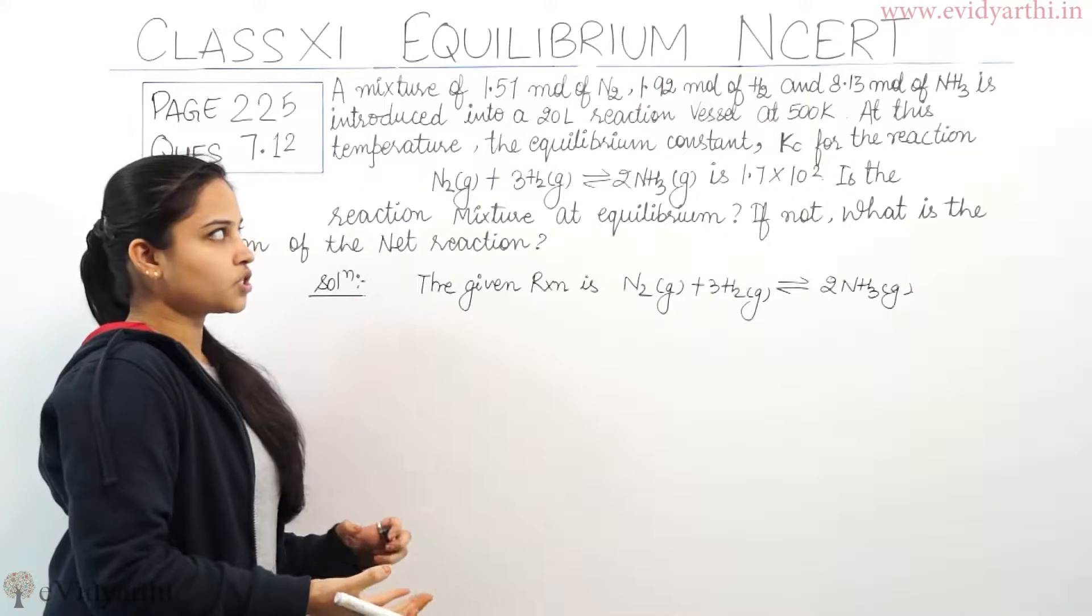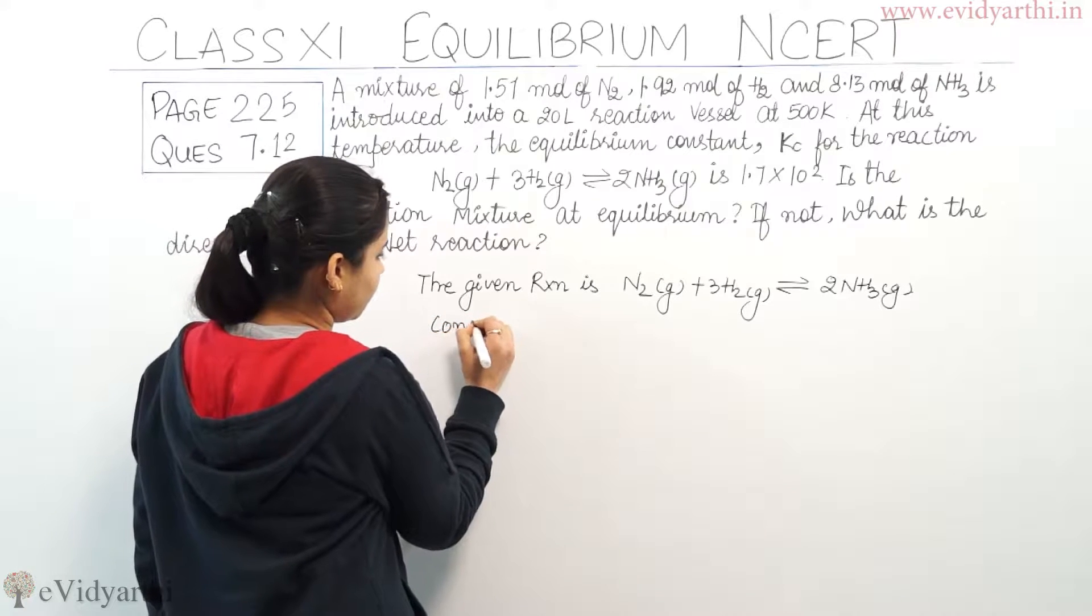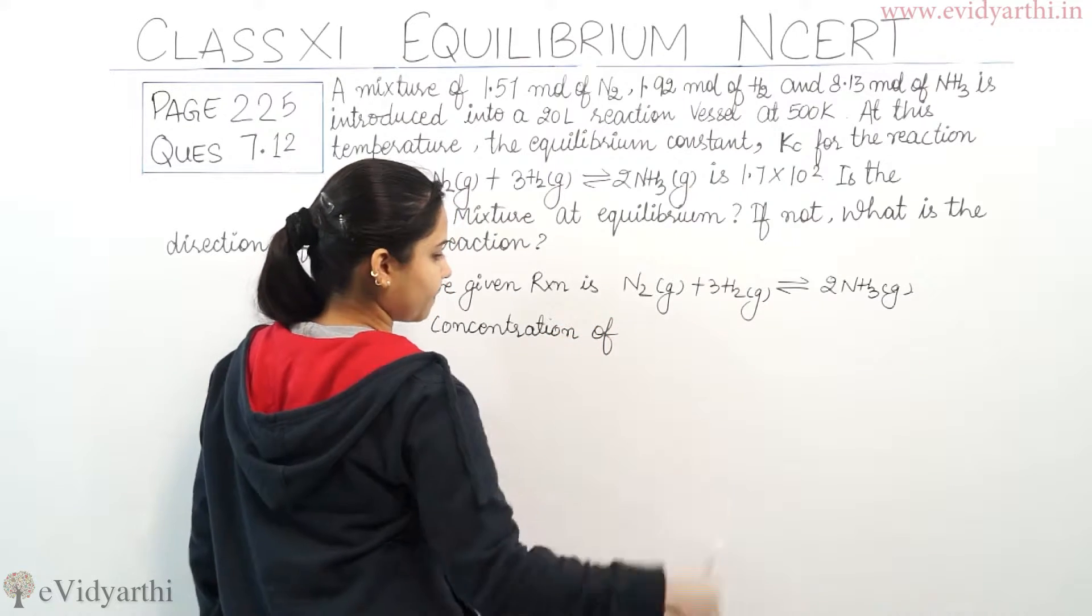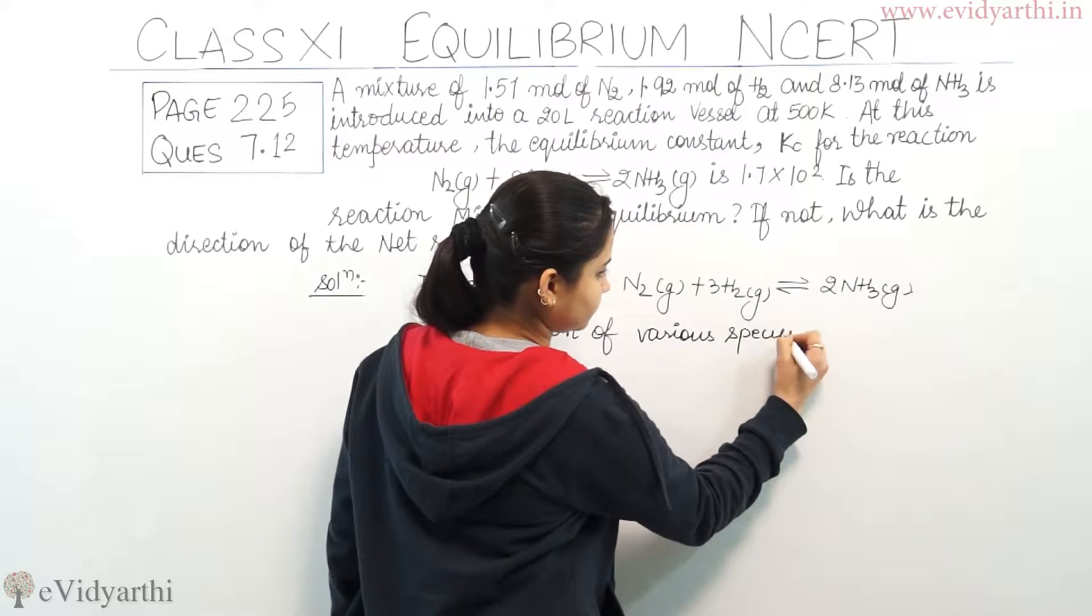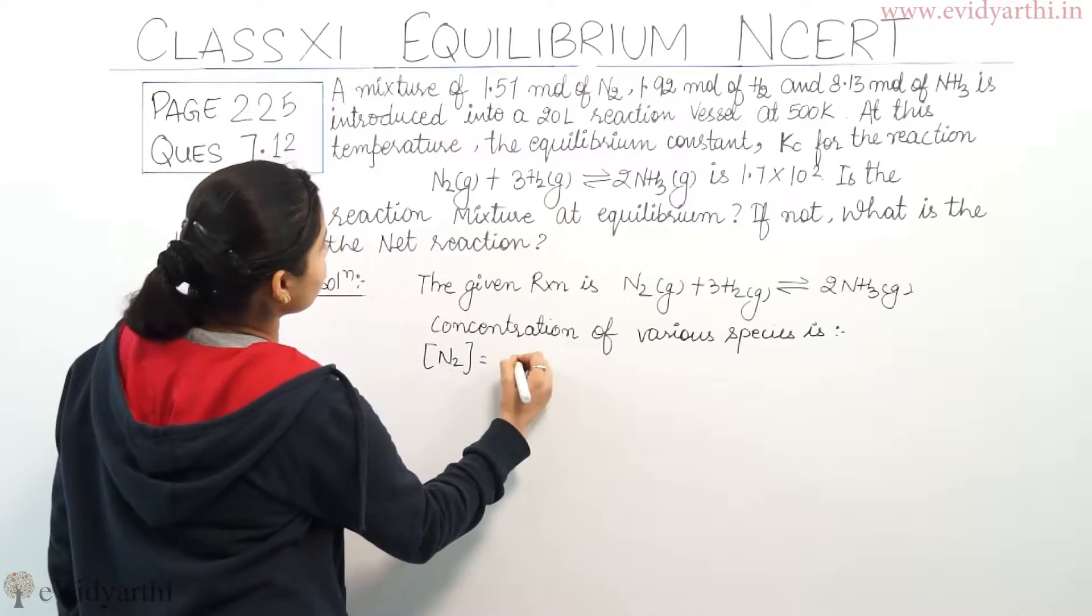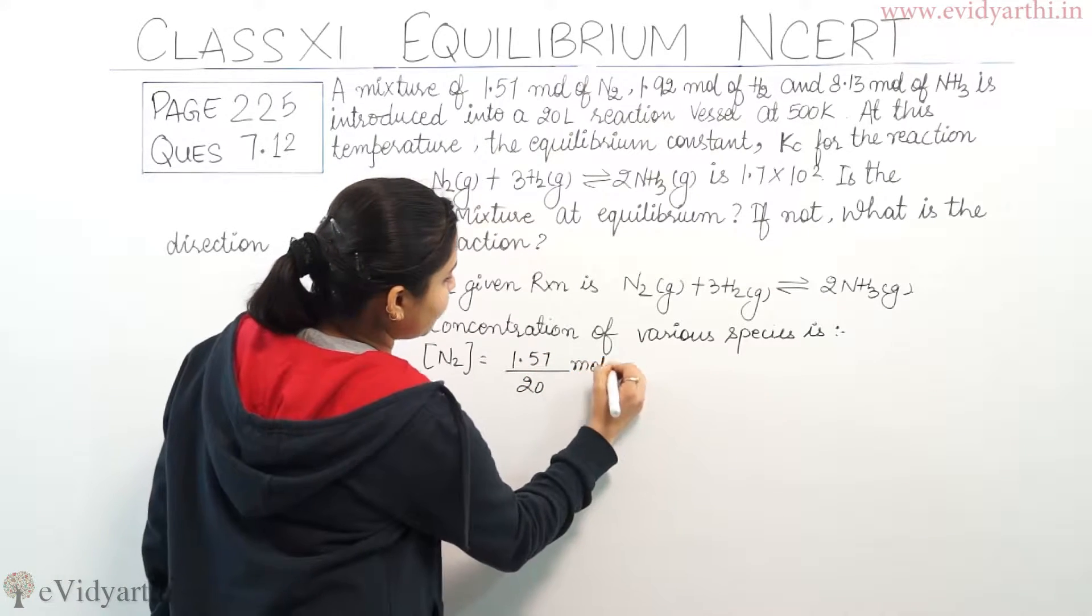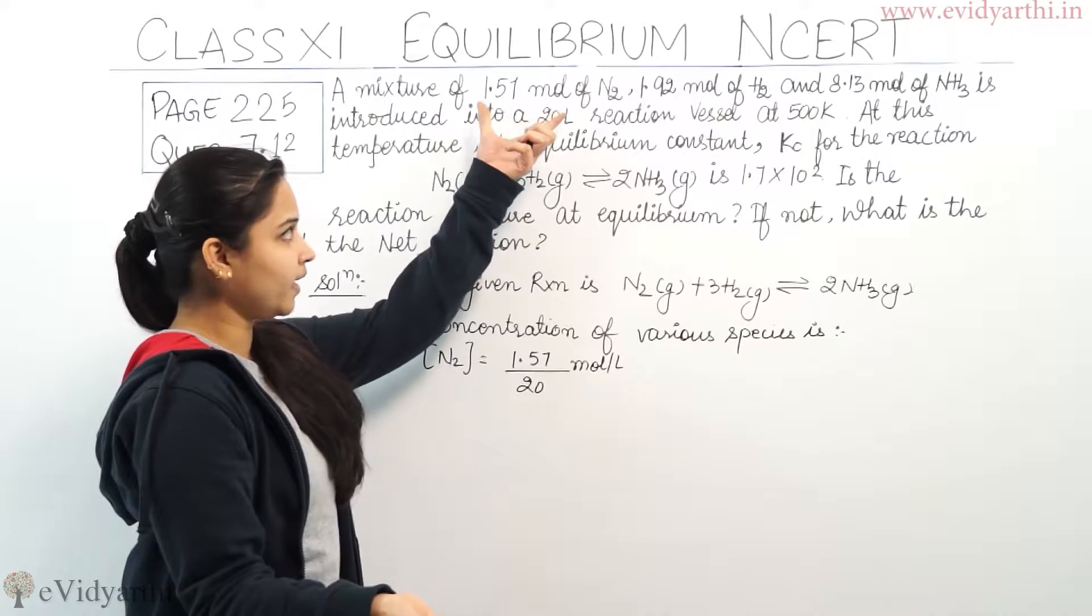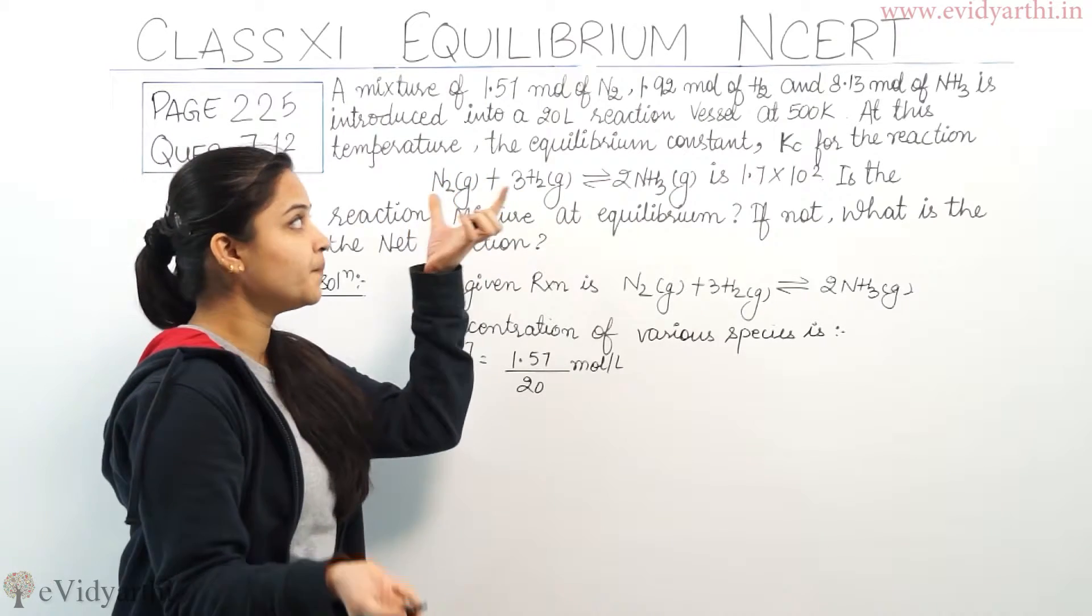Now, the concentration of the various species which is given to us is, concentration of N2 is 1.57 divided by 20 mol per litre. Concentration ki unit moles per litre hoti hai. Moles diya hua hai nitrogen ka and then they have told us that all the mixture was introduced in a 20 litre reaction vessel.